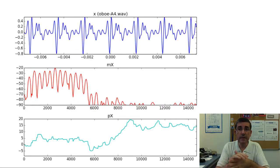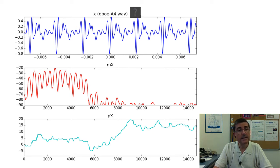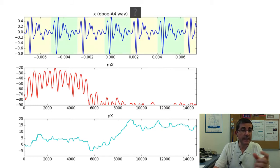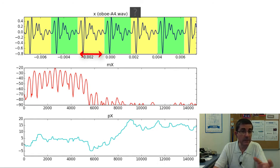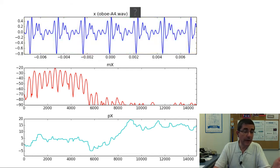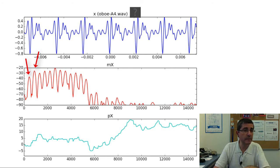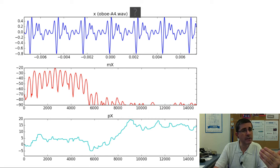To understand the concept of F0 detection, let's look at some sounds and their spectra. This is a fragment of an oboe sound. The time signal clearly shows a periodicity — we can identify a period, a cycle, that keeps repeating, and the inverse of that length is what we call the fundamental frequency. In the frequency domain, in the magnitude spectrum, we also see a periodicity, and basically the distance between two consecutive peaks is the fundamental frequency. So we can measure it in the time domain or in the frequency domain.